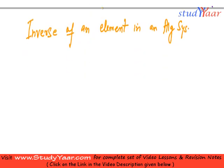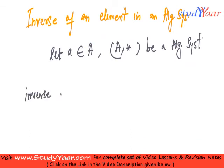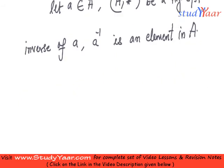So we define inverse as follows. Suppose let a be an element of A and we have (A, star) be an algebraic system. Then the inverse of a, which is denoted as a inverse, is an element in A such that a star a inverse is equal to a inverse star a is equal to the identity element of this algebraic system.